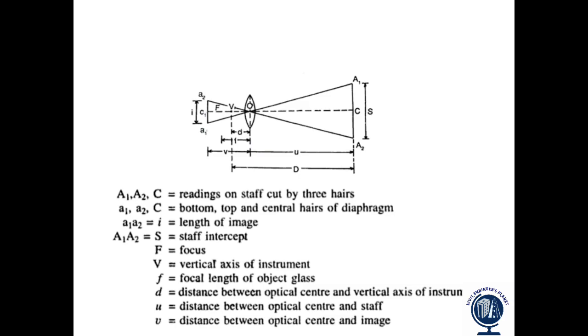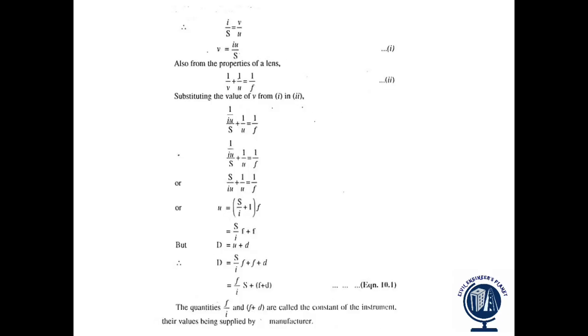Here you can see A1, O, A2. This is one triangle, and A1, O, A2, this is another triangle. So these two triangles are similar. From the properties of similar triangles, we get I by S equals V by U. So we get the value of V as I times U by S.